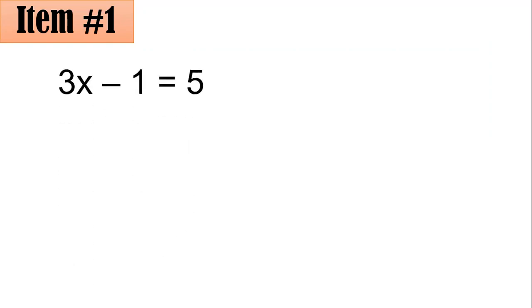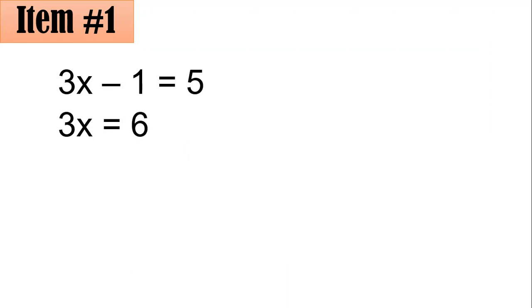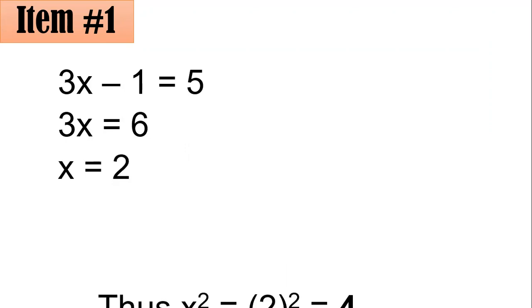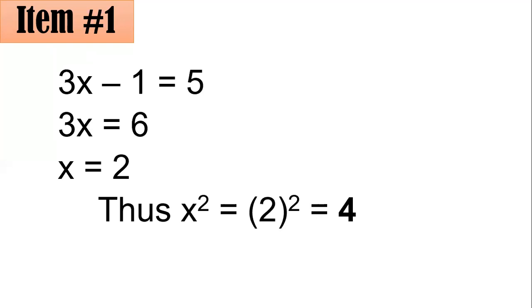If 3x minus 1 equals 5, adding 1 to both sides gives 3x equals 6. Dividing both sides by 3 gives x equals 2. If x equals 2, then x squared equals 2 times 2, which is 4. Letter A is the correct answer. I hope you had a great start.